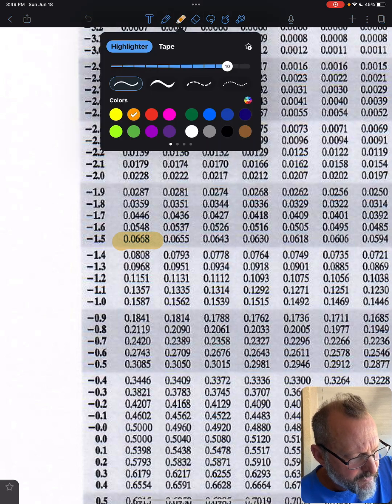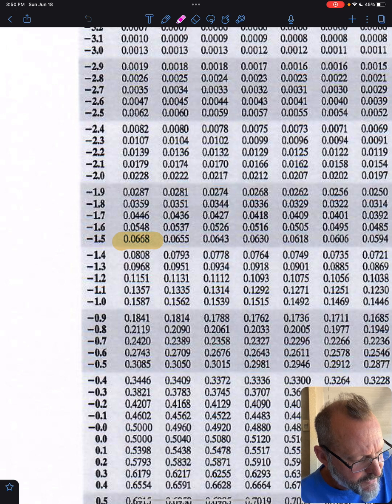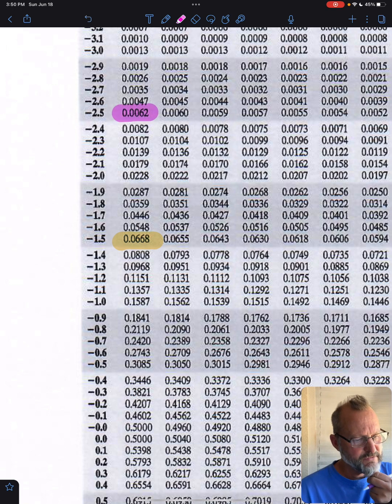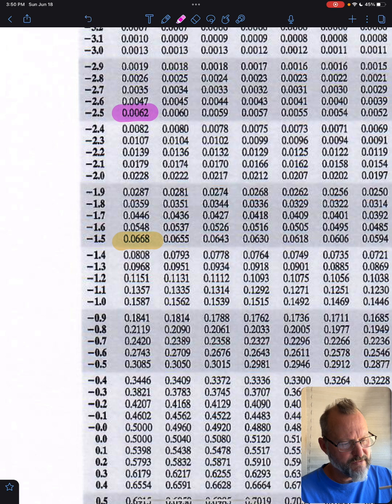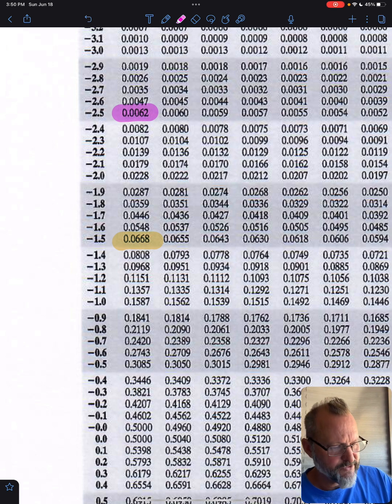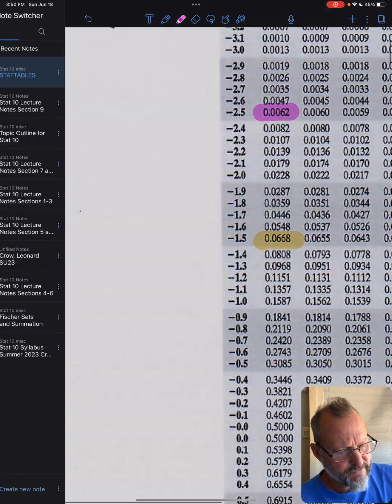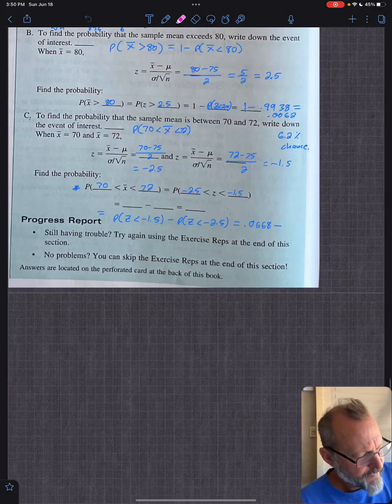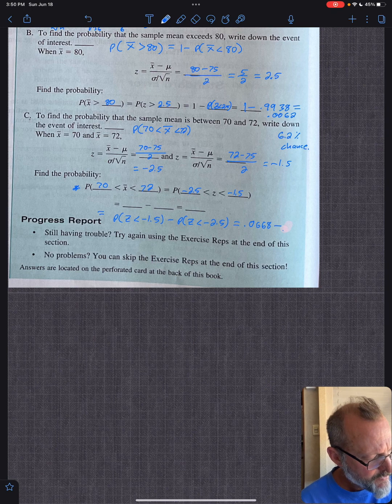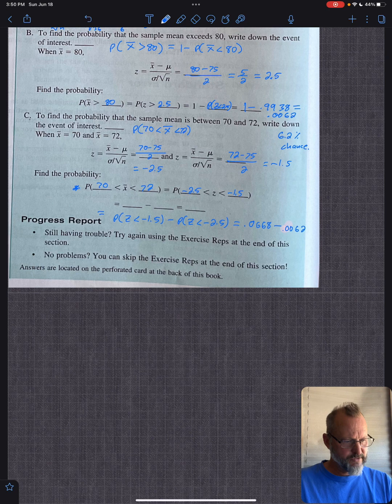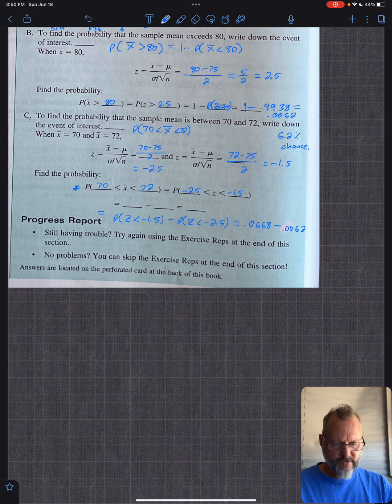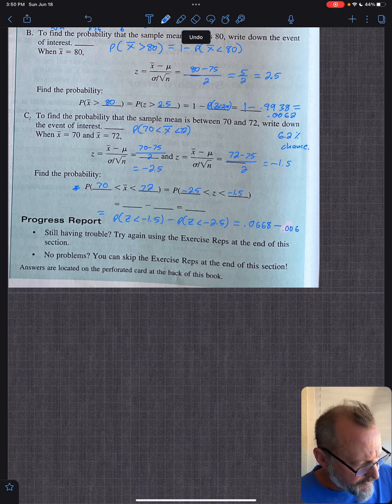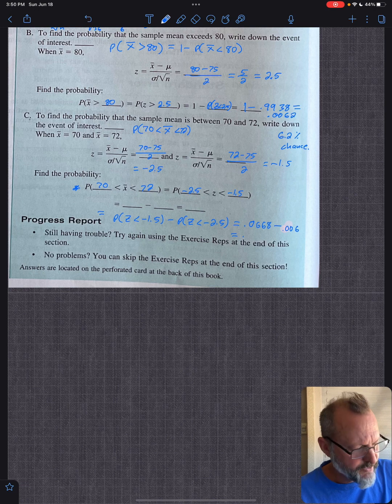0.0062. That's negative 2.50 so that's why we're using that. So 0.0062. 0.0668 and you're going to subtract 0.0062 and so that probability is 0.0606.